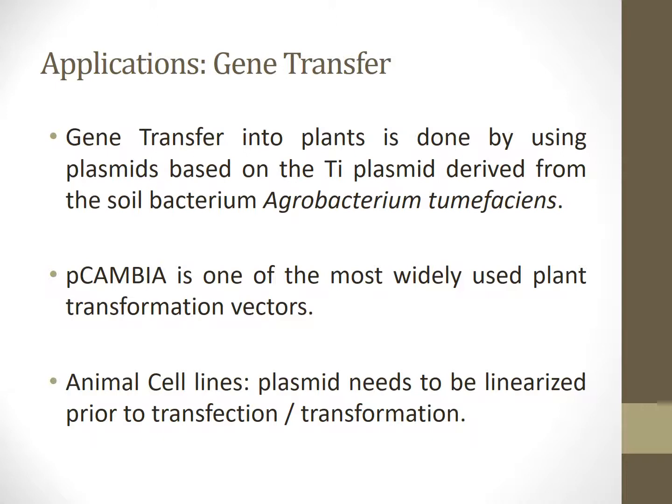Another application is that of gene transfer. Gene transfer of plants is done by using plasmids based on the TI plasmid derived from the soil bacterium Agrobacterium tumefaciens. pCAMBIA is one of the most widely used plant transformation vectors. In the case of animal cell lines, plasmids need to be linearized by transfection and transformation so that they can integrate into the host genome.